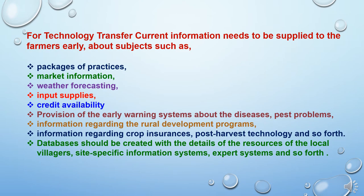For successful new technology adoption and its transfer, the technology transfer information needs to be supplied to the farmers early. These subjects include packages of practices, market information, weather forecasting, input supplies, credit availability, provision of early warning systems about diseases and pest problems, information regarding rural development programs, crop insurance, post-harvest technology, and a database should be created with details of resources of local villagers, site-specific information systems, expert systems, and so forth.